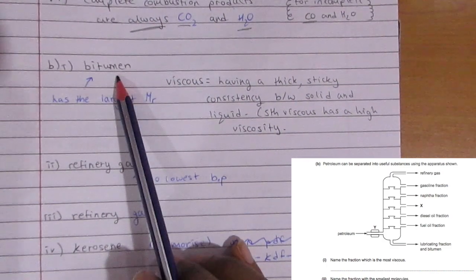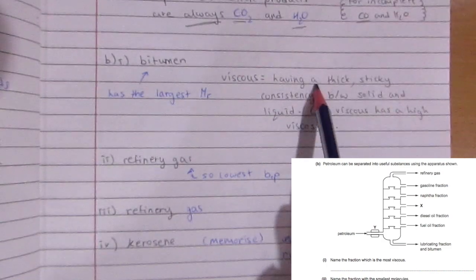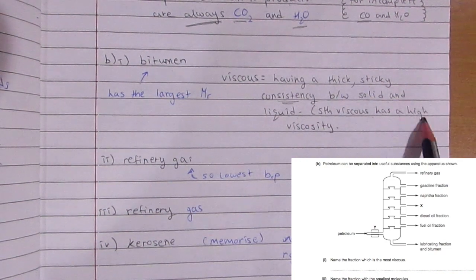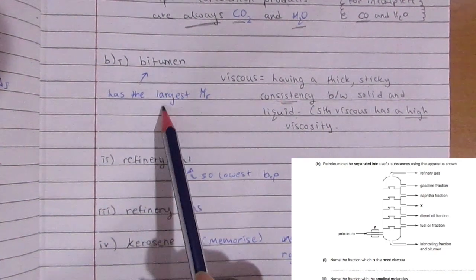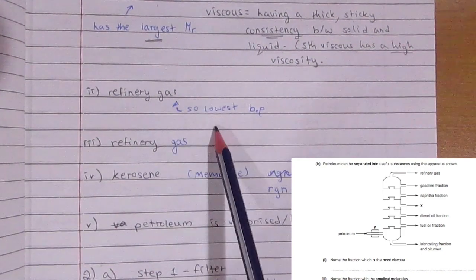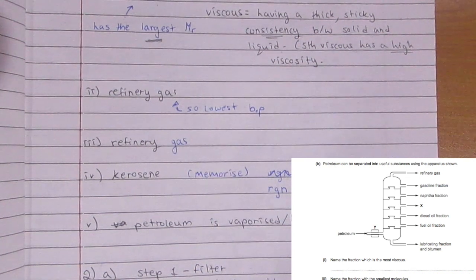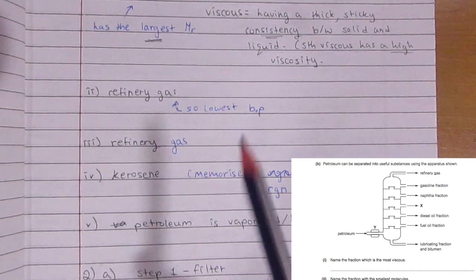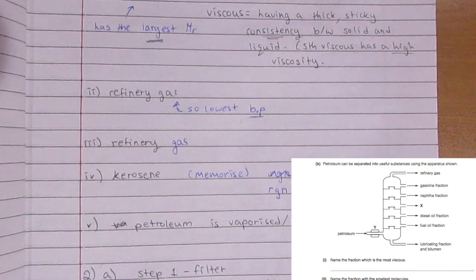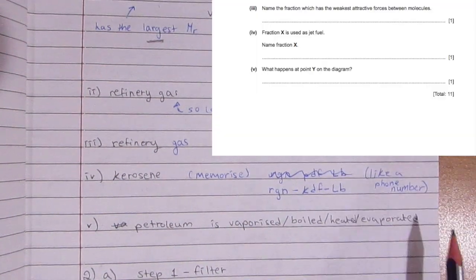Part B: butamine would be the answer because it has the largest molecular mass, meaning it's the heaviest. Something viscous has a thick, sticky consistency—basically high viscosity, like honey. Which one has the smallest molecule? That would be refinery gas since it's released at the top, meaning it has the lowest boiling point and is the least heavy.